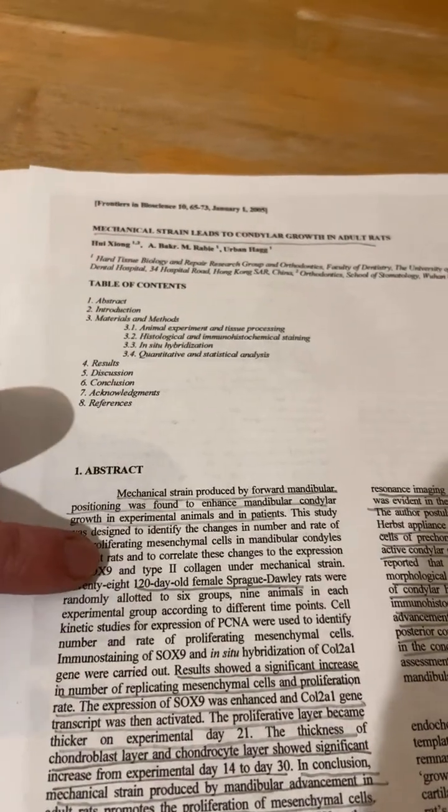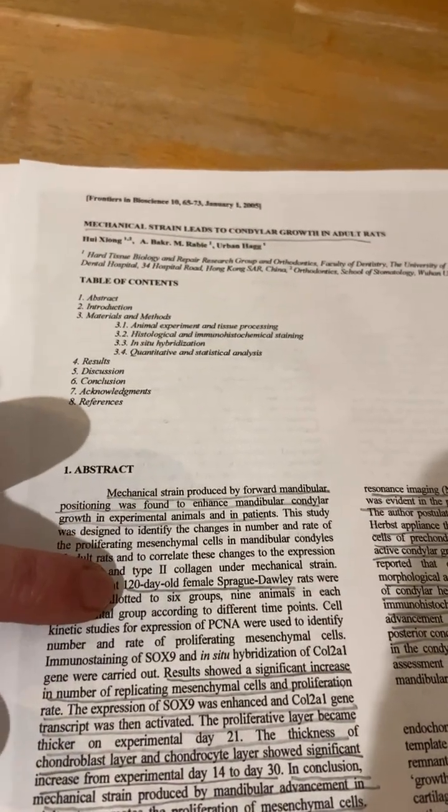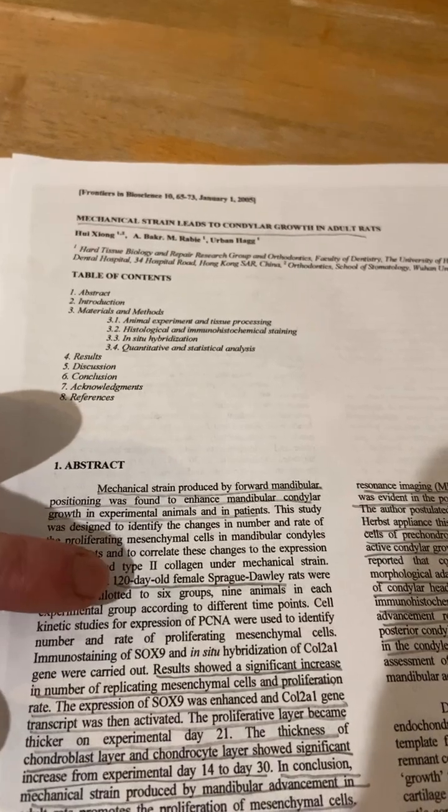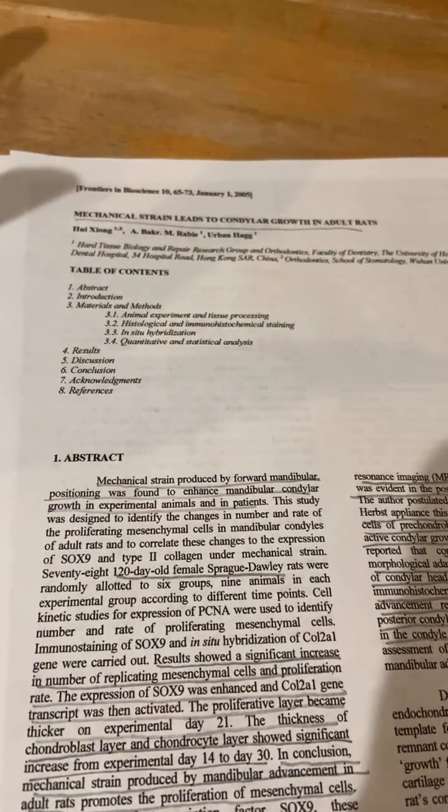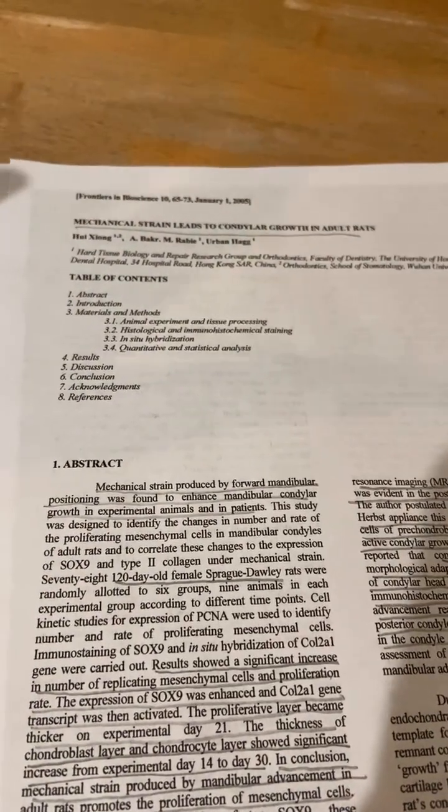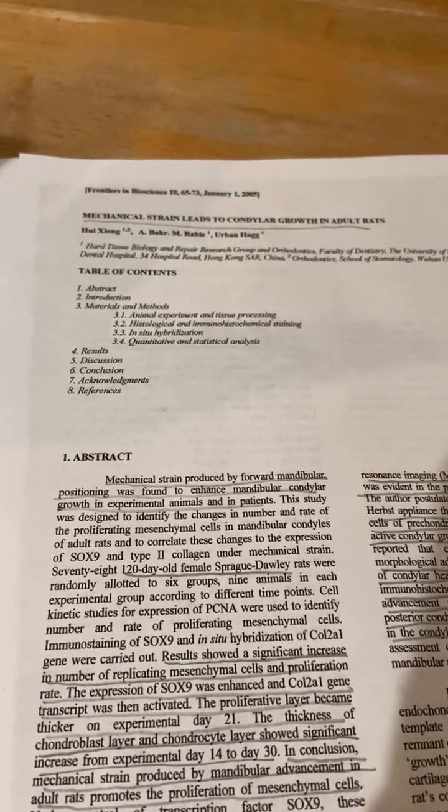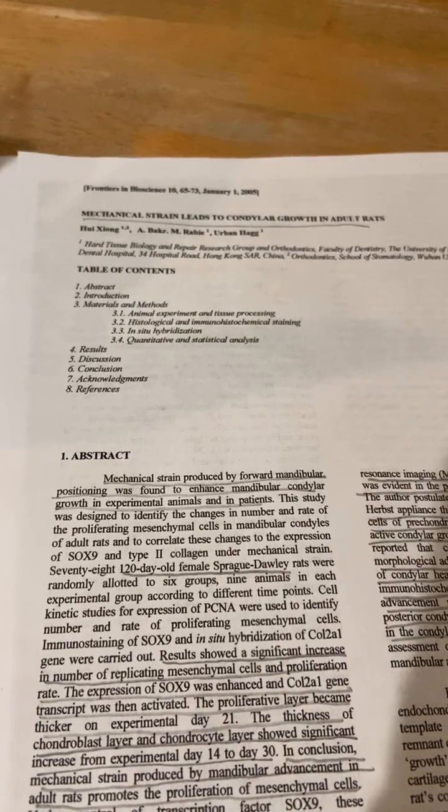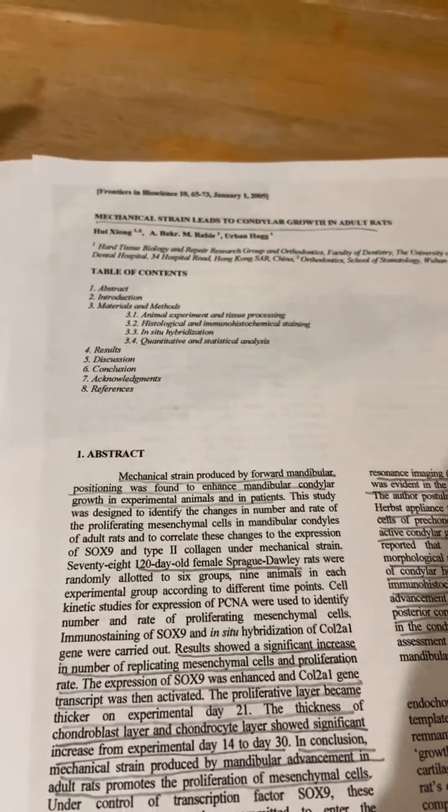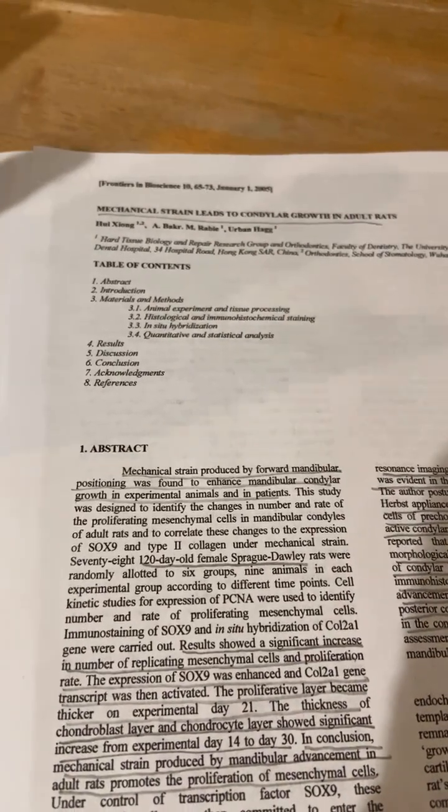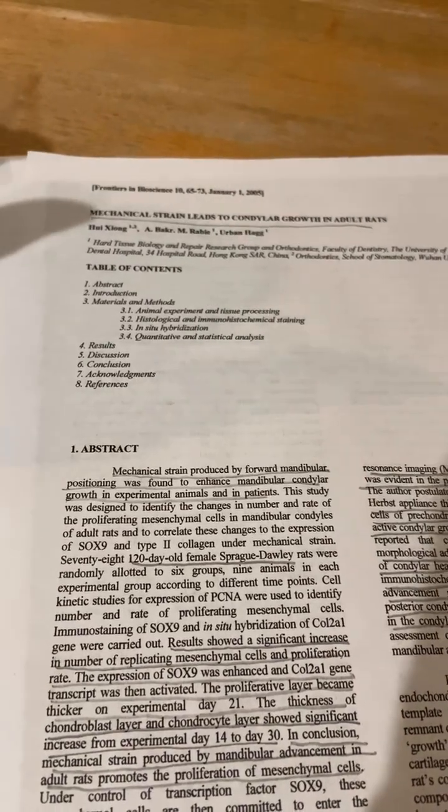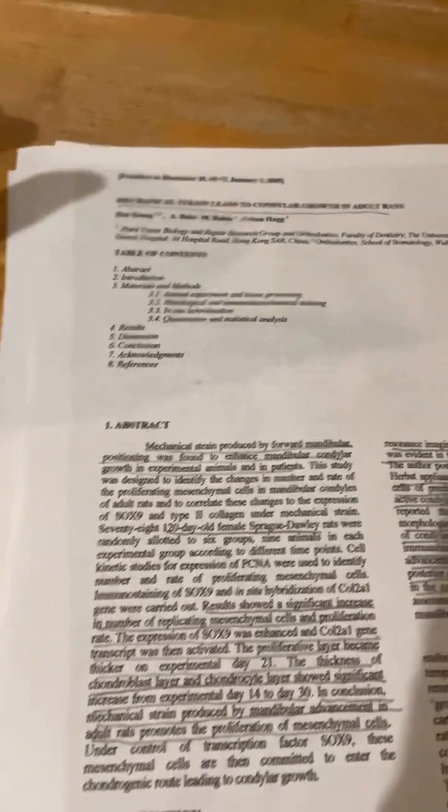So the animals used were 120-day female Sprague-Dawley rats. So that's about four months old. That's not ideal. Ideally, we'd want six months to prove that it can happen after syneiscence because rats' growth rate becomes senescent, which means that they kind of stop working, but they don't fuse, but it's still kind of solid.